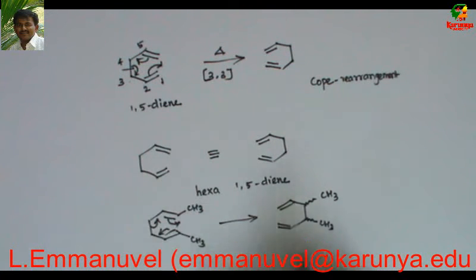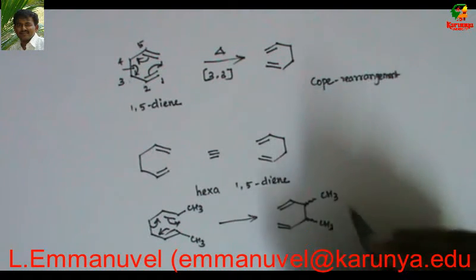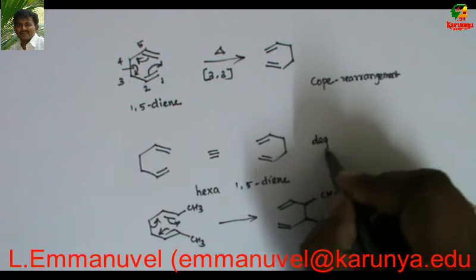Now this and this they are not same. This is octadiene but this one is hexa-diene with two methyl groups. So this is not degenerate, this one is known as degenerate.